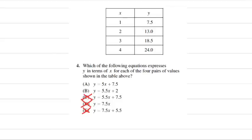5.5X plus 2, that means that if I plugged in 1, I'd have 5.5 times 1 plus 2, which is 7.5, which is actually... wait, 5.5 plus 2 is 7.5. So for the first combination, choice B is working. Let's try it for some of the others.